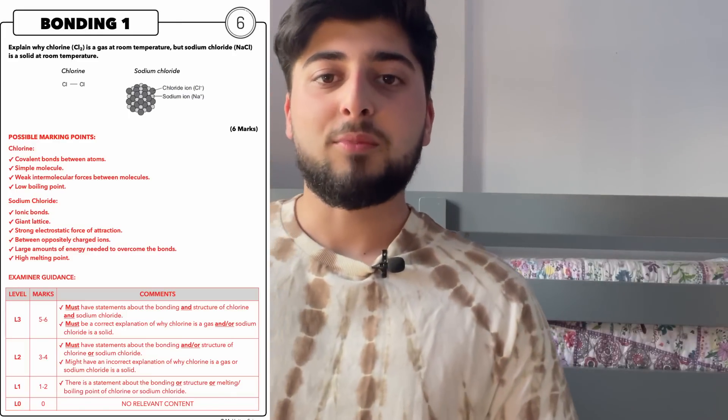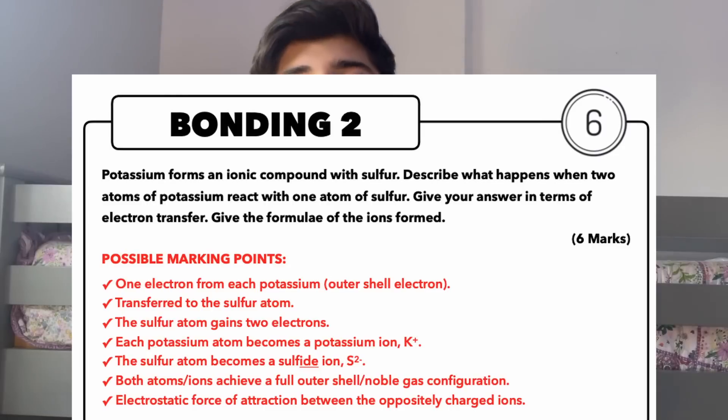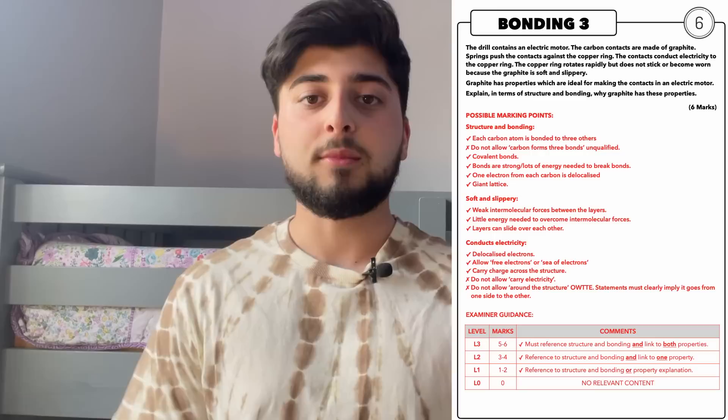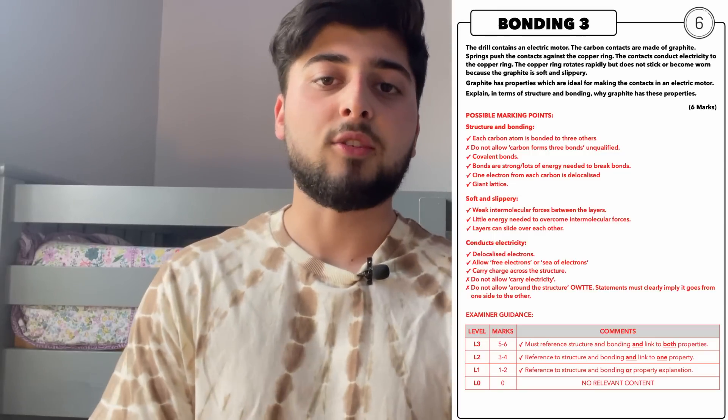Firstly, it's really important to do past paper practice for chemistry. Out of all the sciences, chemistry examiners repeat questions the most — they literally repeat questions word for word sometimes. You need to know your common definitions and be able to talk about ions, atoms, and molecules very well. Stuff on bonding always comes up — ionic bonding, covalent bonding, sometimes graphite and graphene — always in there.